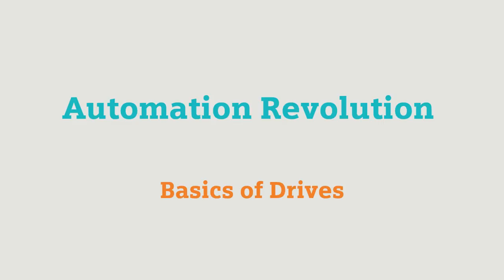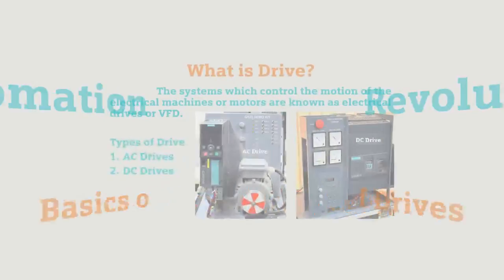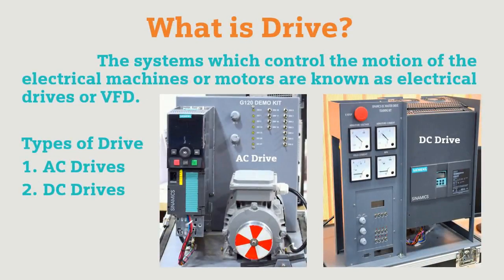We'll see the definition in detail. The system which controls the motion of electrical machines or motors is known as electrical drives or variable frequency drives. Ultimately, we are changing and varying the frequency, and based on that we are controlling speed, torque, or motion for electrical machines or motors.